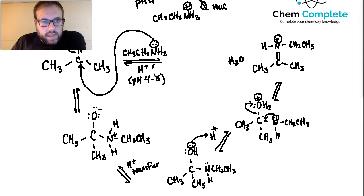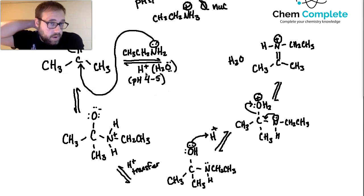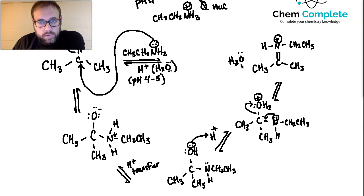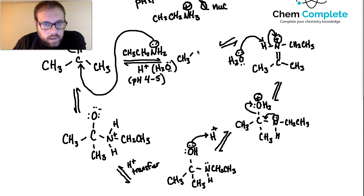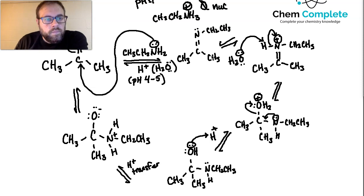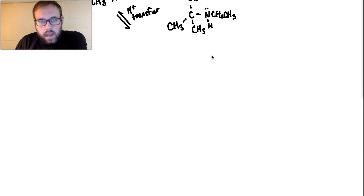The H2O comes from the implied aqueous acidic solution — the amine is polar, so we'd use water as solvent. The water comes in, grabs the hydrogen from nitrogen, which then gets back its lone pair. All of that leads to the final product: CH3-C(=N-CH2CH3)-CH3, which is the imine product with a lone pair on nitrogen.